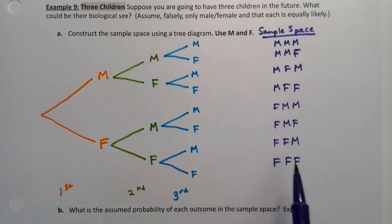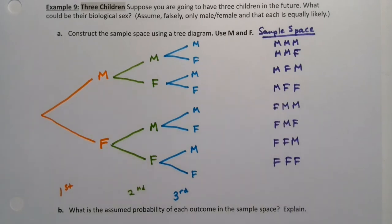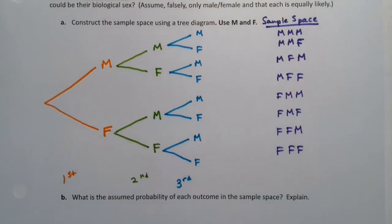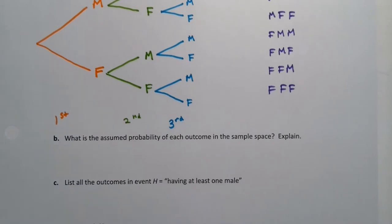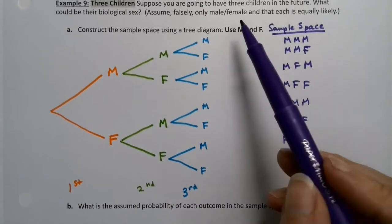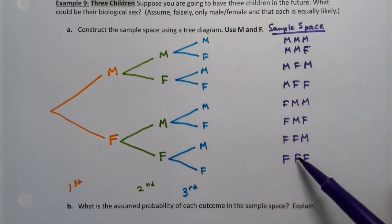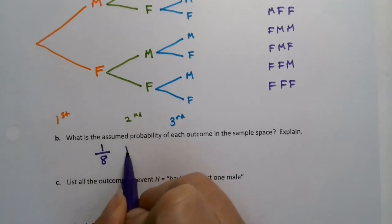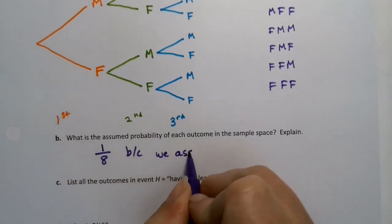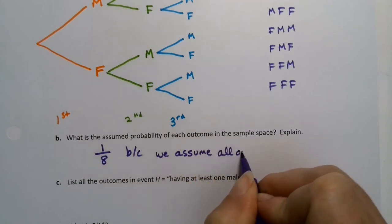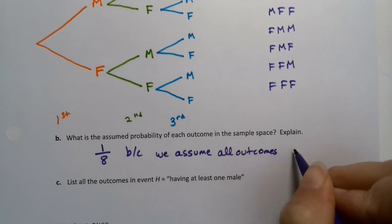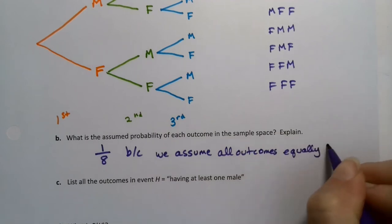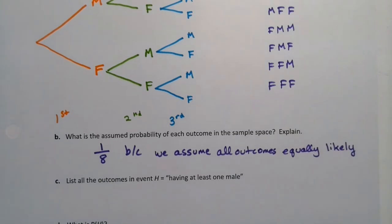You don't get full credit unless you have the sample space listed next to it. Because the whole reason for doing the tree diagram is to be able to list that space. Now what is the assumed probability of each outcome in that sample space? Well, we assumed 50-50 for each of the children, which would mean everything here is equally likely. So that means there's eight possibilities. So one out of eight. Because we assume all outcomes are equally likely. And that's coming out of the fact that we assumed male and female were 50-50, which is actually an incorrect assumption, but nevertheless, there we have it.